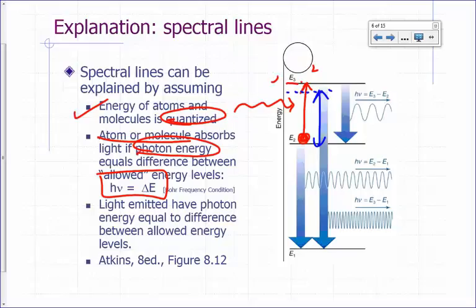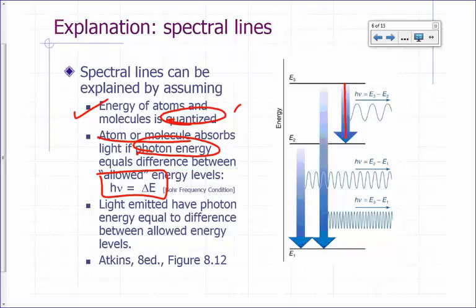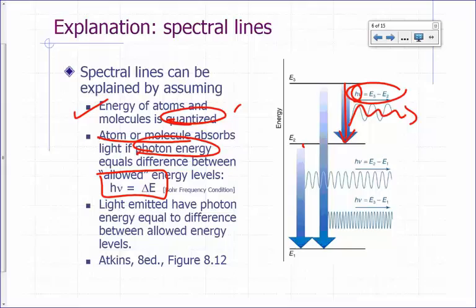If an atom or molecule were to emit light, the same thing applies. Let's say it went from E3 to E2 — the photon that's released when it drops from E3 to E2 must correspond to the difference between E3 and E2. So if it loses energy equal to E3 minus E2, that corresponds to the photon energy. It's like saying if my bank balance drops from $250 to $100, then $150 must have left, and that has to be carried away by the photon.